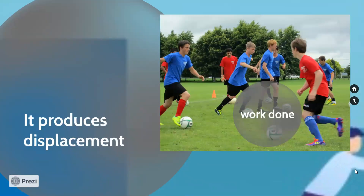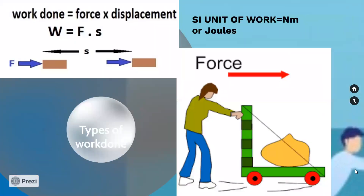Work done requires a non-zero force and a non-zero displacement. We have a mathematical expression: work done is the product of force and displacement. The formula is W equals F into S, where F stands for force and S stands for displacement. The SI unit of force is Newton and the SI unit of displacement is meter.